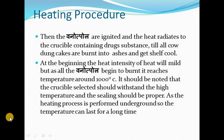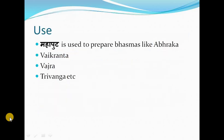The heating procedure: the Vanyapala are ignited and the heat radiates to the crucible containing the drug substance, till all cow dung cakes are burnt into ashes and the system gets self-cooled. At the beginning the heat intensity is mild, but as all the Vanyapala begin to burn it reaches a temperature around 1000 degrees centigrade. The crucible selected should withstand high temperature and the sealing should be proper, as the heating process is performed underground so the temperature can last for a long time.